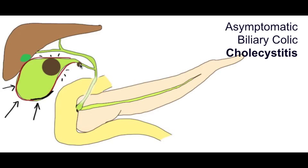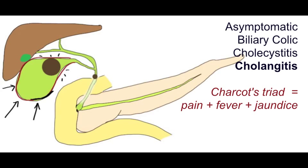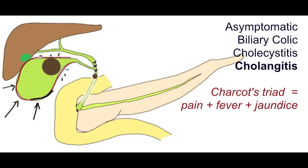Now imagine the gallstone leaving the gallbladder and lodging somewhere in the common bile duct. Say here for example. This might lead to Charcot's triad of pain, fever, and also jaundice, as the flow of bile is obstructed. So biliary stasis causes inflammation and infection with gram-negative and anaerobic bacteria, and that's called ascending cholangitis.